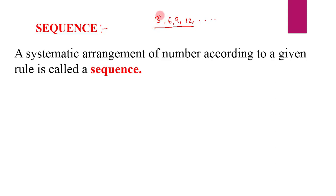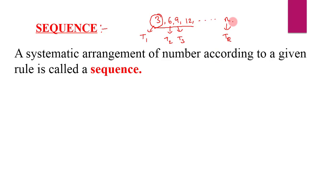The first term is represented as T1, the second term as T2, the third term as T3, and so on. If there are n terms, that is represented as Tn. The nth term of a sequence is also called the general term of a sequence.